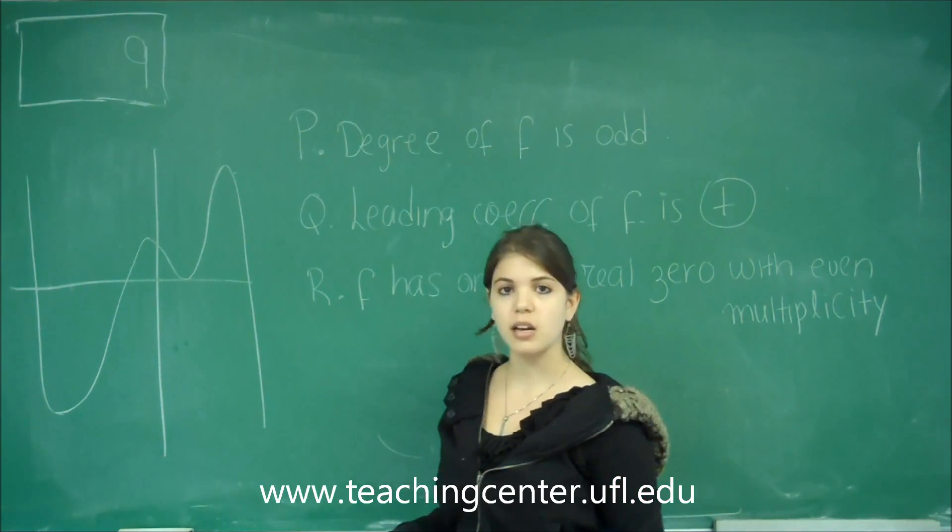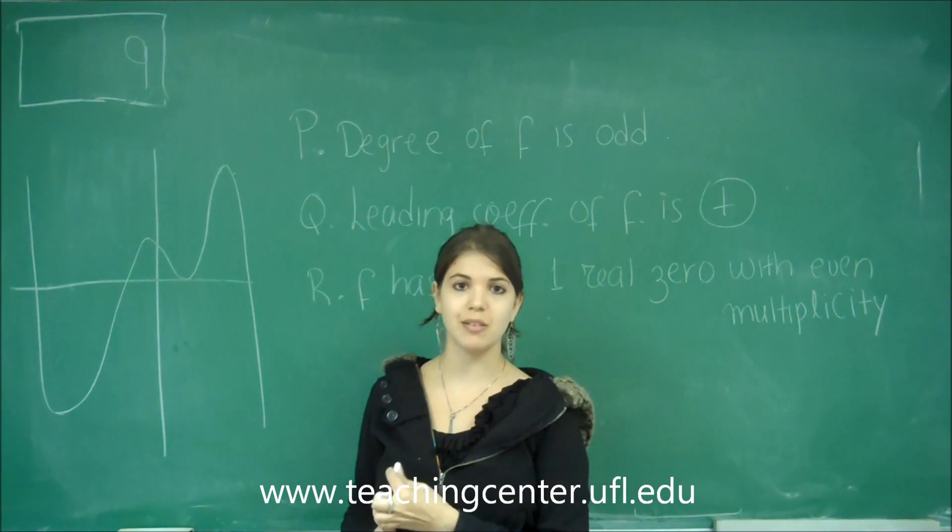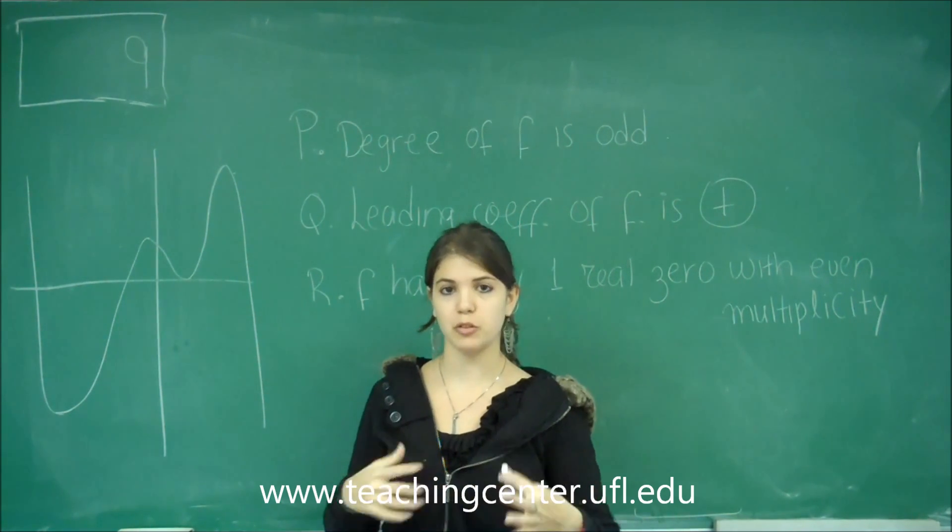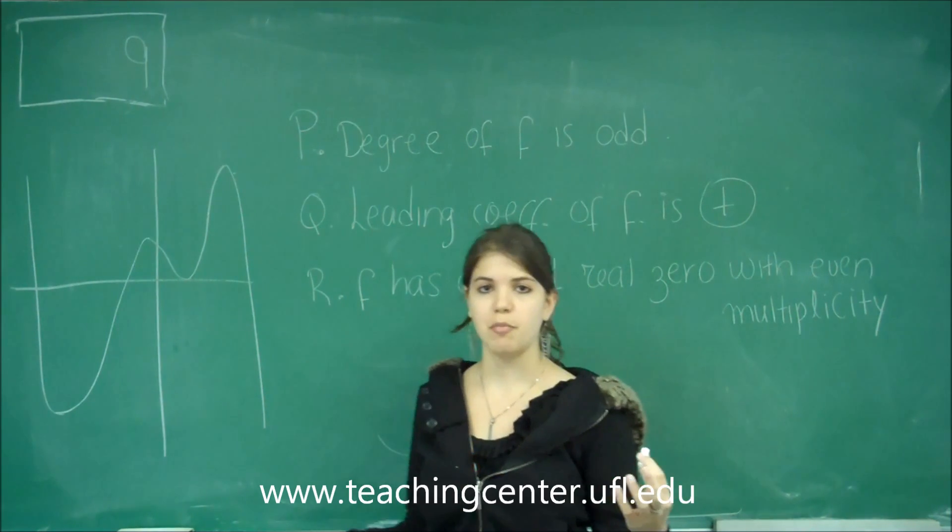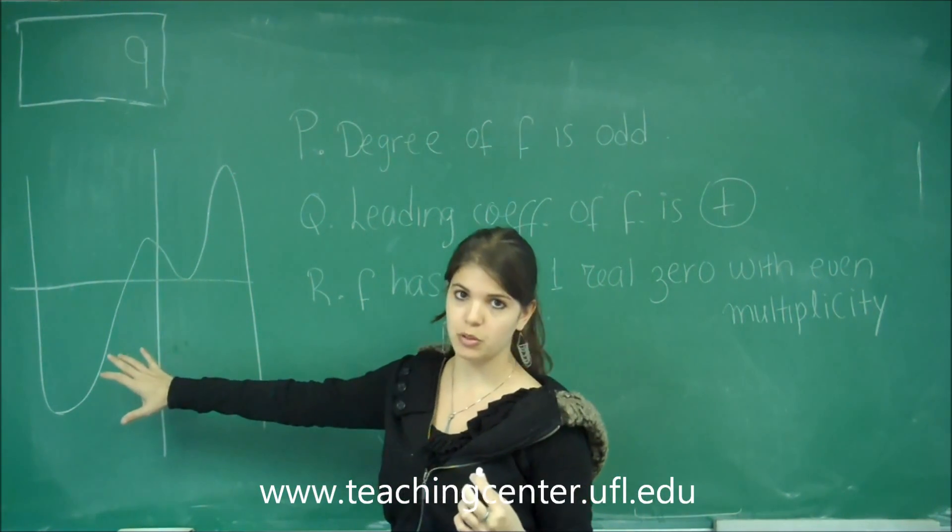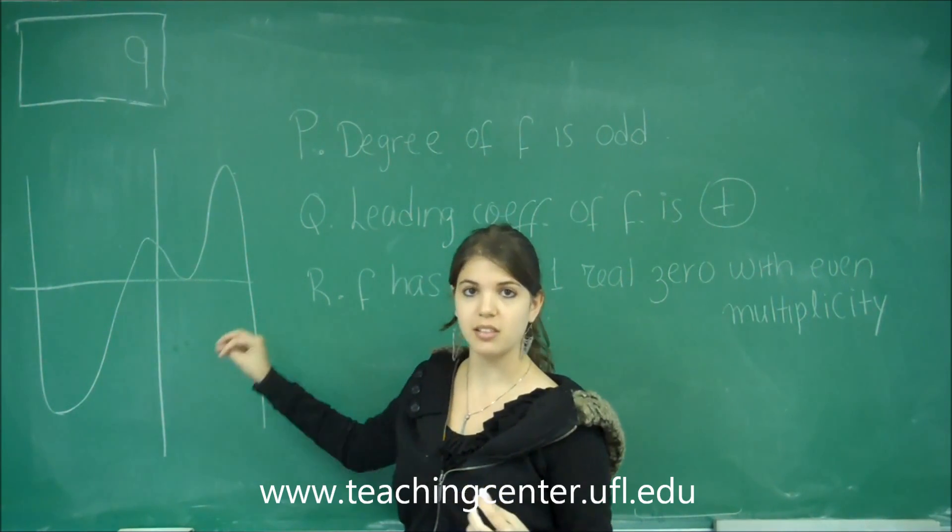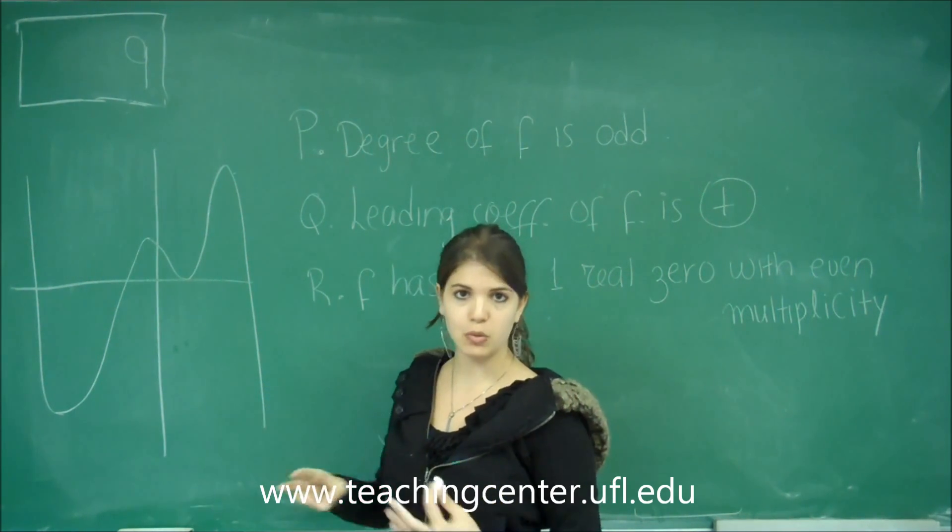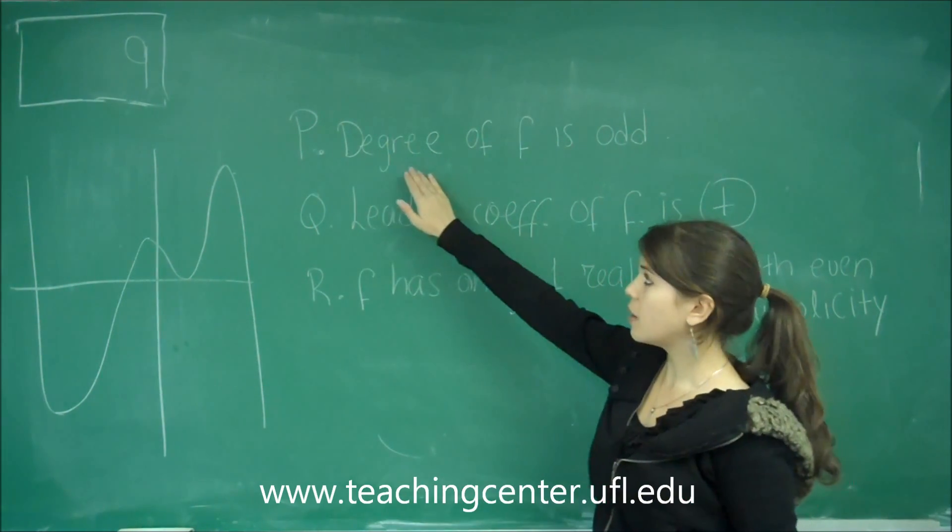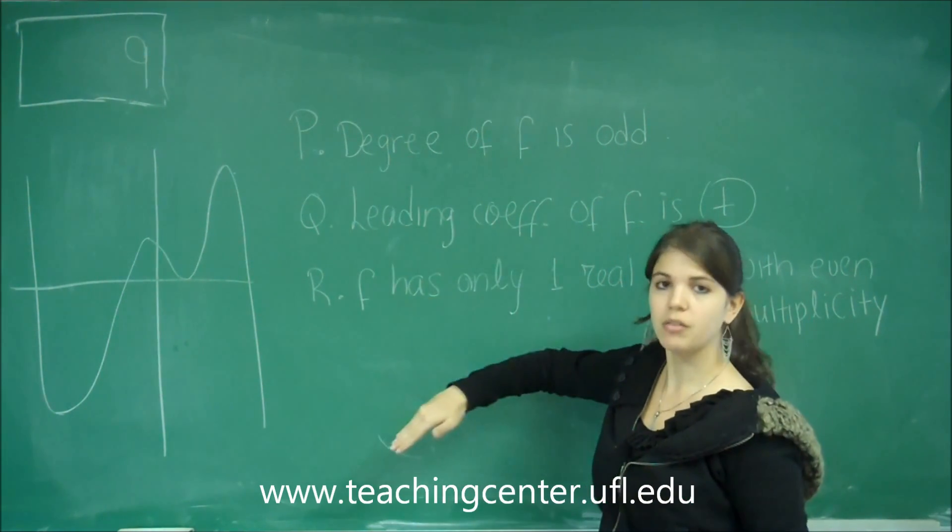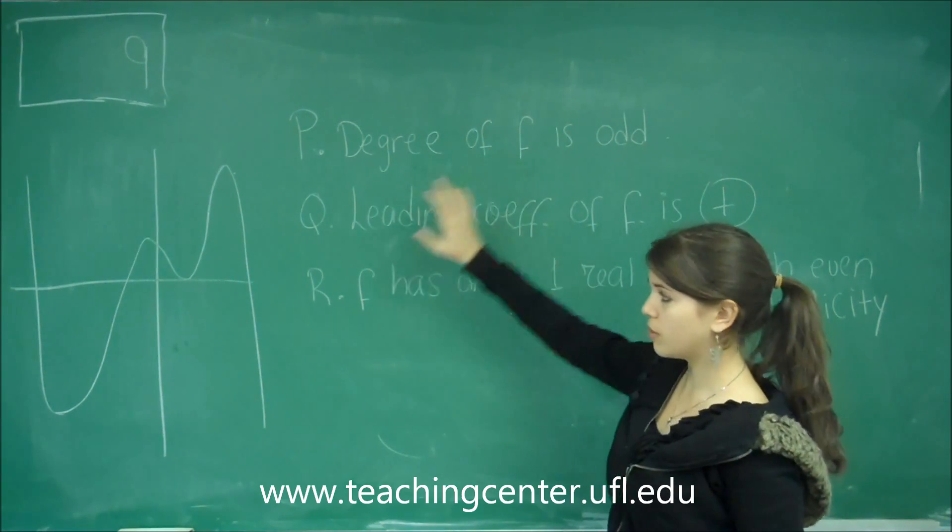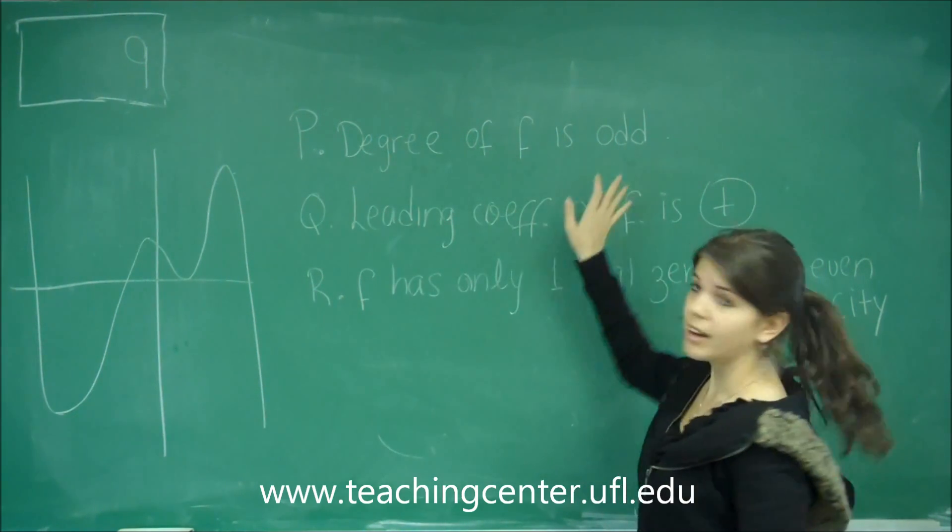Basically what this question is trying to test is the ability for the student to be able to draw a graph of a polynomial. This is a graph, we're going backwards, we're trying to test different things that you would use to draw the graph. Let's see, for option P, we'll analyze each one of these separately. Option P says the degree of the function f of the graph is odd.